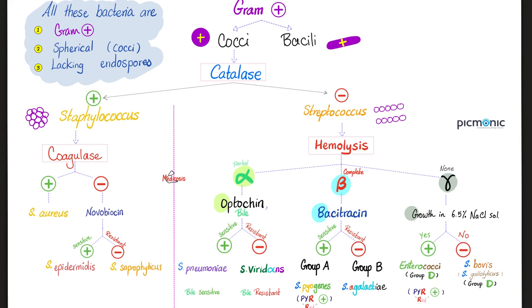Streptococcus bovis is a gram-positive coccus that is catalase negative and gamma hemolytic, which means no hemolysis. Can it grow in 6.5% salt solution? The answer is no.